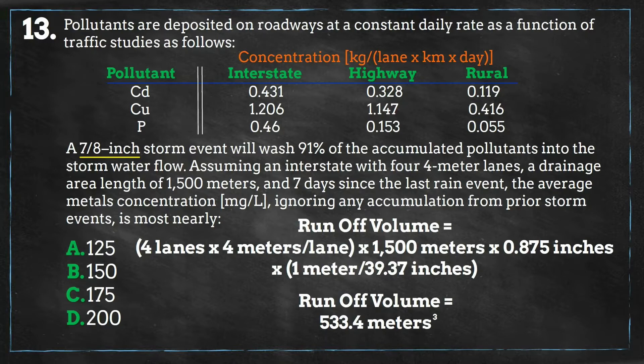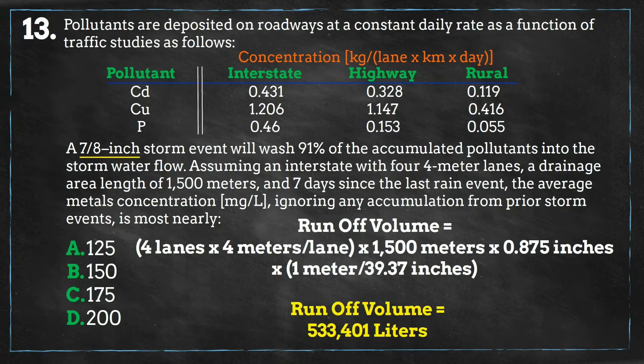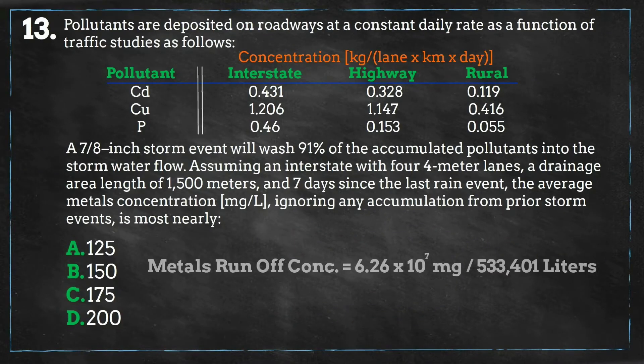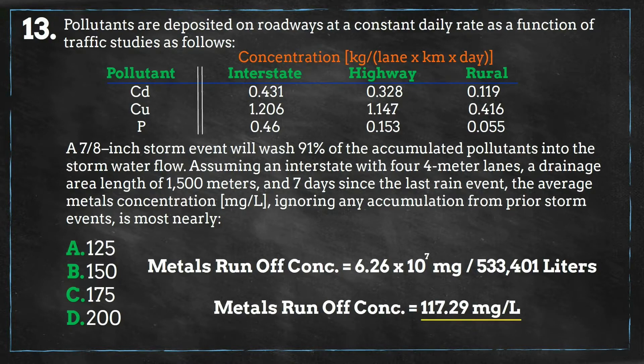Since there are 1,000 liters in one cubic meter we can make this conversion and we get about 533,000 liters. Finally, we will divide the metals mass by the runoff volume and we get an average metals concentration of 117 milligrams per liter which is closest to A.